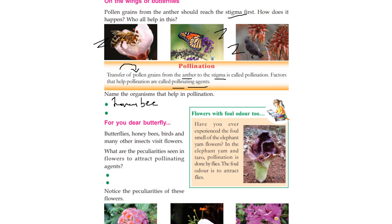These are the peculiarities of flowers to attract pollinating agents like birds, butterflies, and honey bees. Flowers are colorful, they produce nectar and honey, and they have a good smell. These features make flowers attractive.